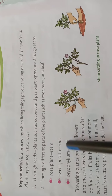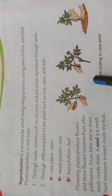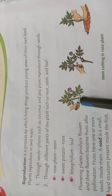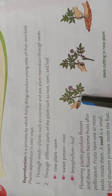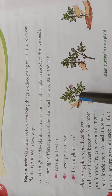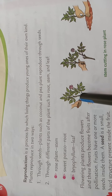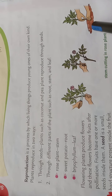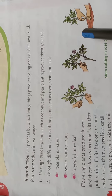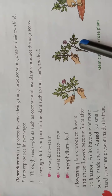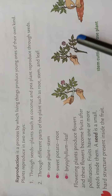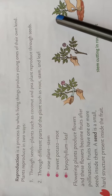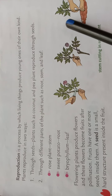Now, rose plant — here we can see one picture. If you cut the stem of the rose plant and then germinate it, it will reproduce and grow again.